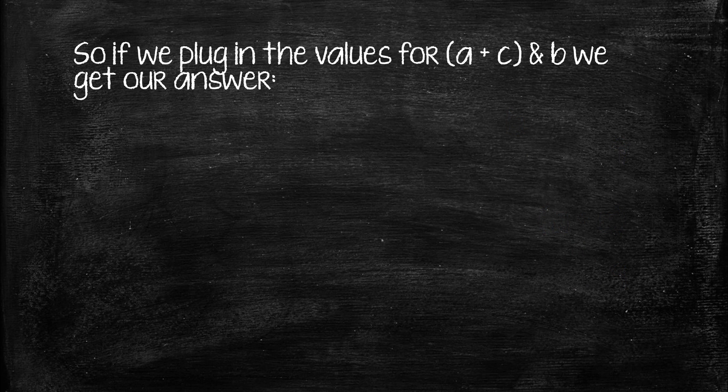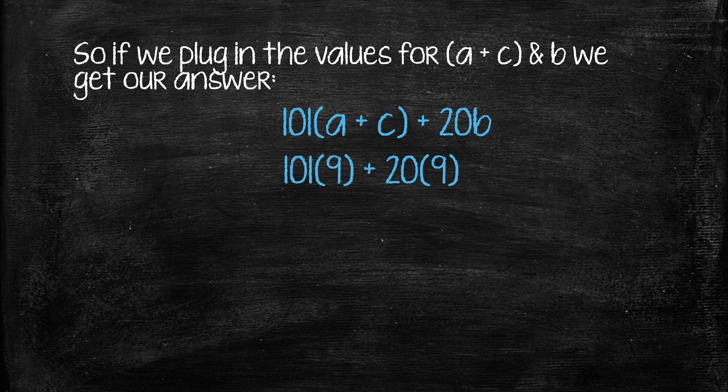So if we plug in the values for A plus C and B, we get our answer. 101 times 9 is 909, 20 times 9 equals 180. 909 plus 180 equals 1089.